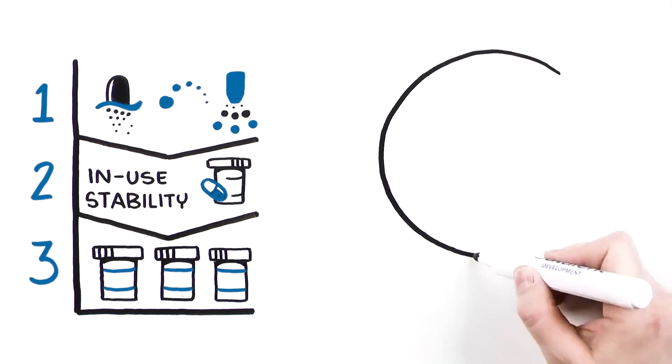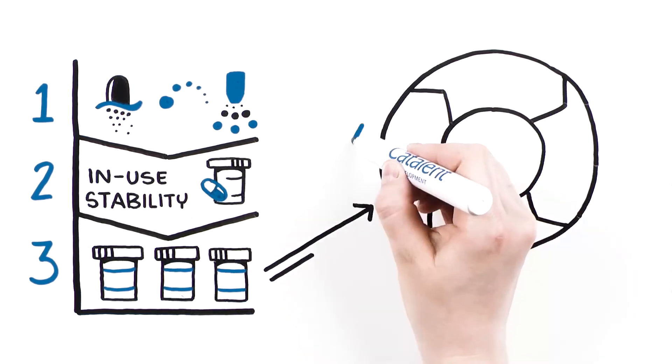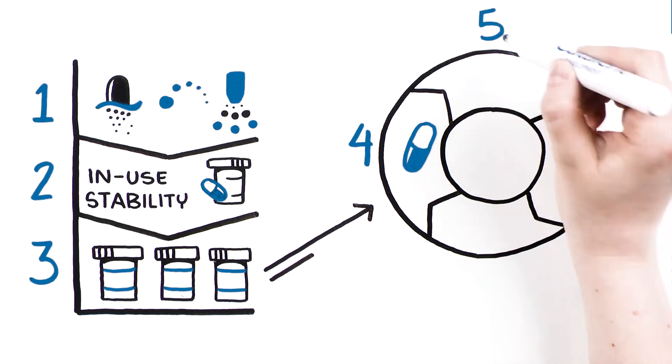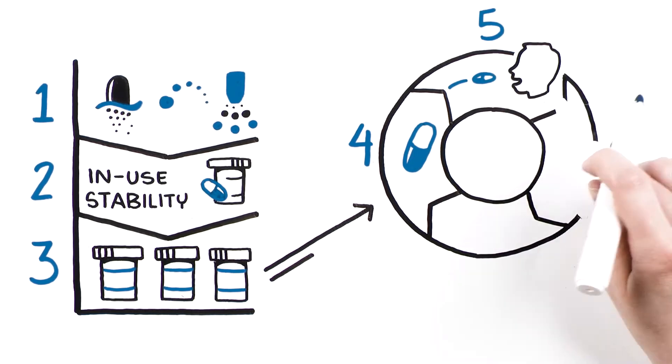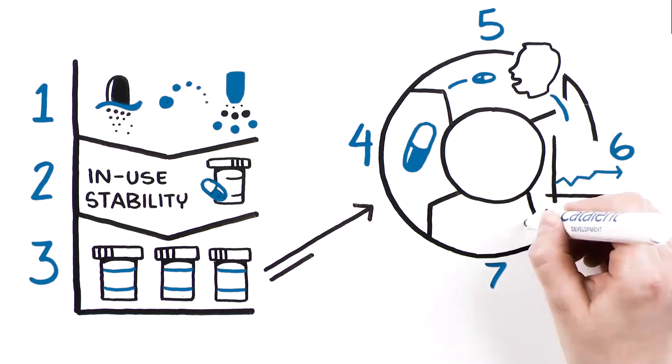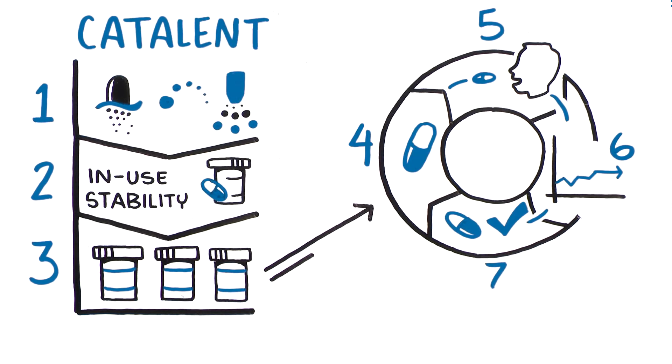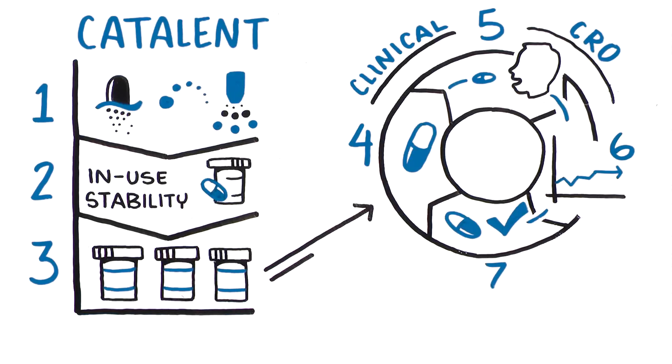At Step 4, the bulk intermediate product is filled on-demand into capsules or bottles by the Phase I clinic. At Steps 5 through 7, dose increments are established based on real-time clinical data. Steps 1 to 3 and regulatory support are provided by Catalan. Steps 4 to 6 are conducted at the Phase I clinical CRO, and Step 7 is the customer's decision.